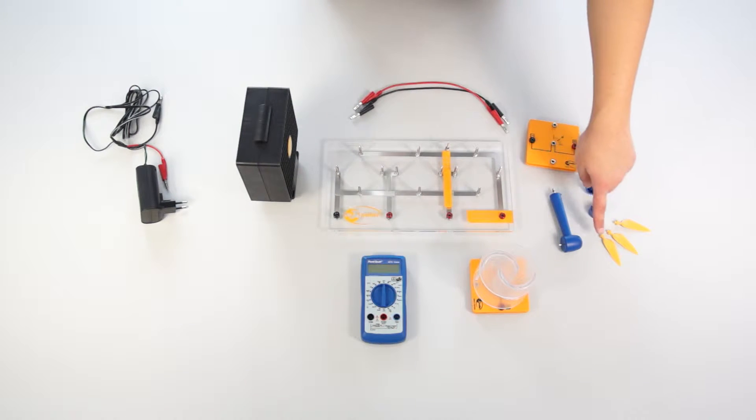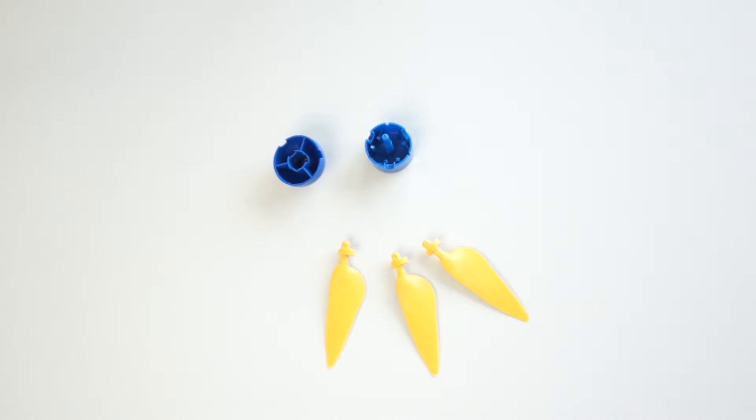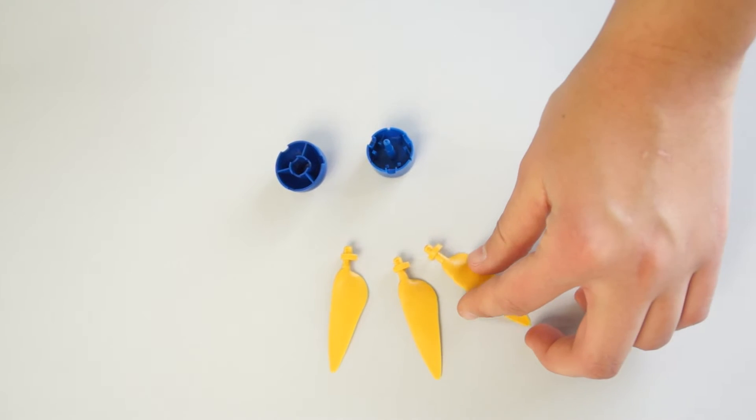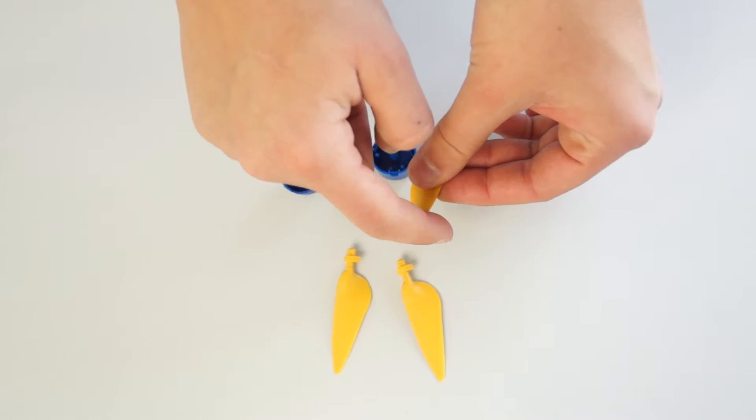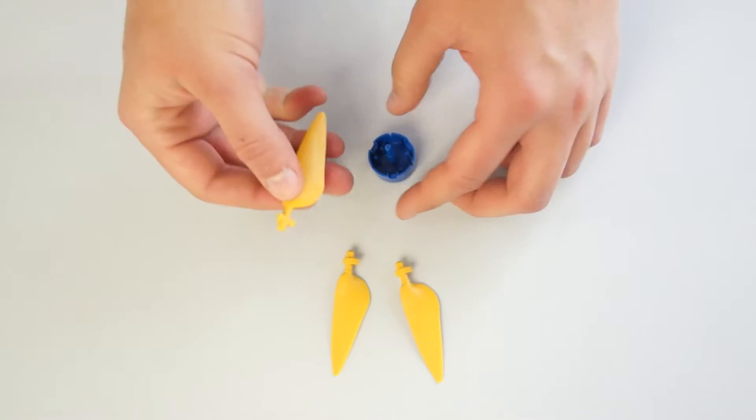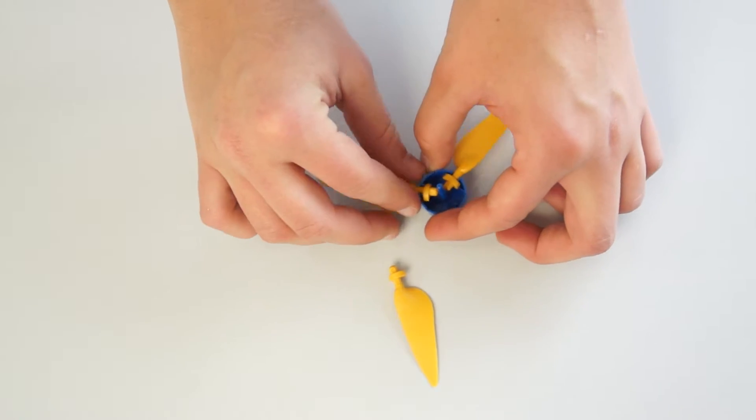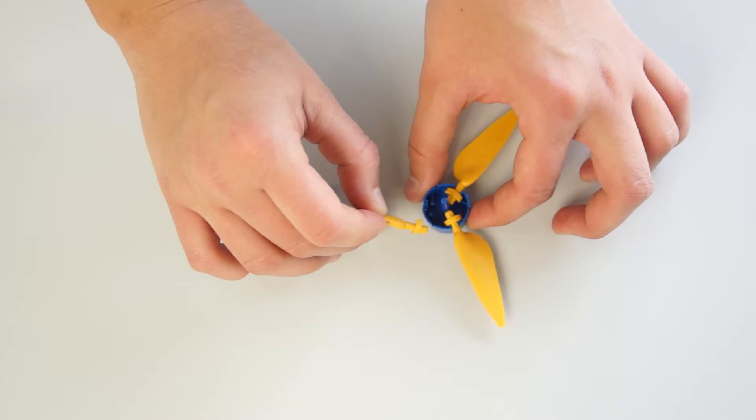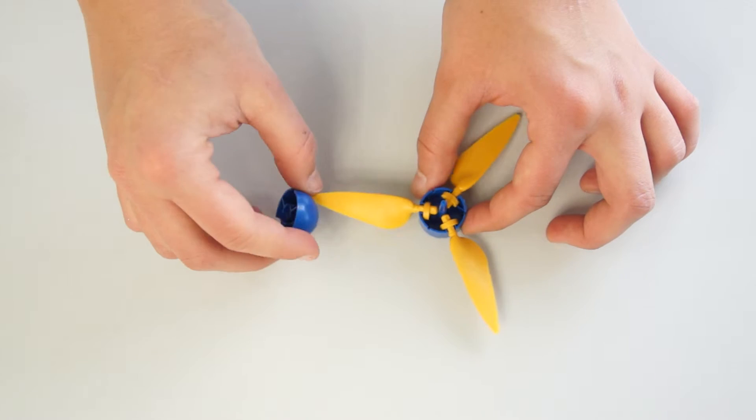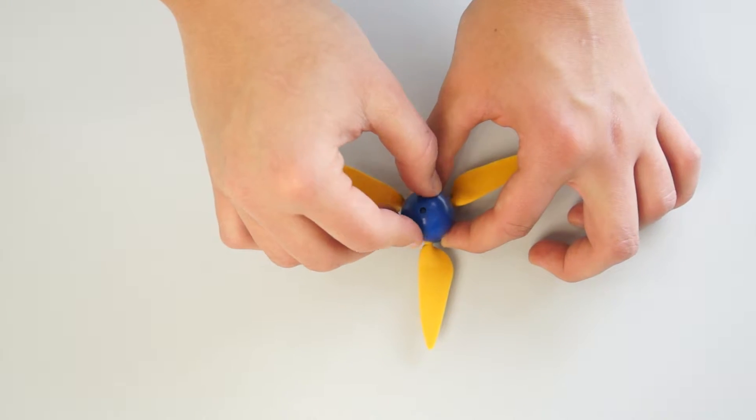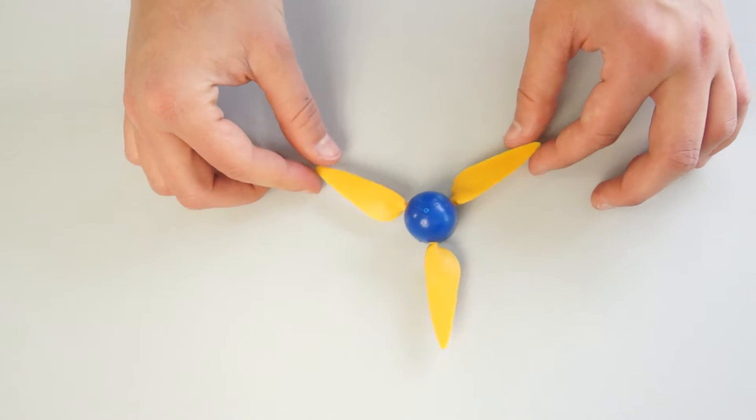First we want to build the wind turbine. We use three optimised rotor blades and the associated hub and cap. The rotor blades are put with the rounded side up into the recesses in the hub. Subsequently the cap is placed easily and firmly. Our wind rotor is now finished.